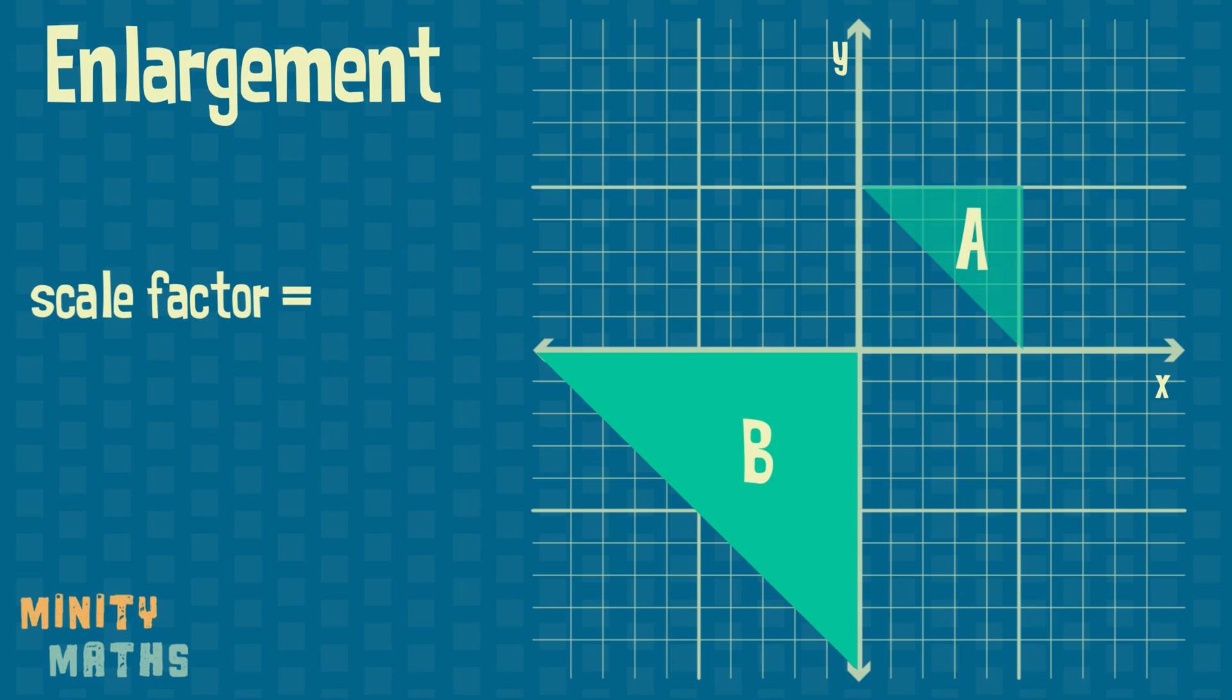We can find the scale factor by measuring the length of one side. We measure this side for both the new and old shapes. We can then divide the new length by the old length to see how much it has increased or decreased.